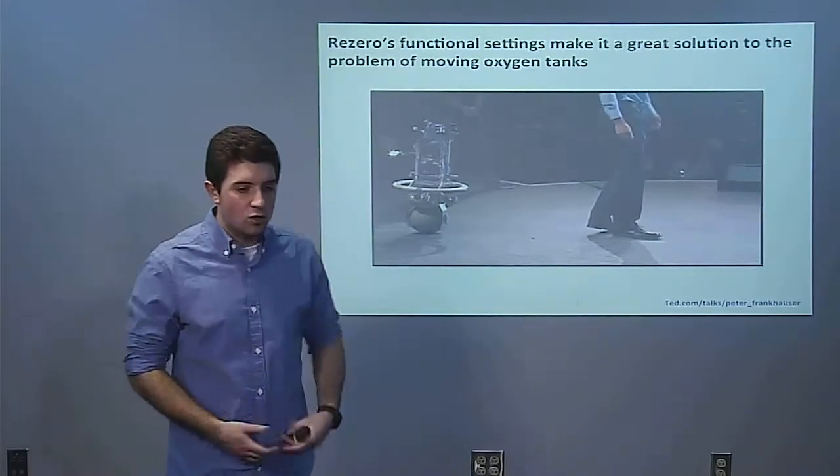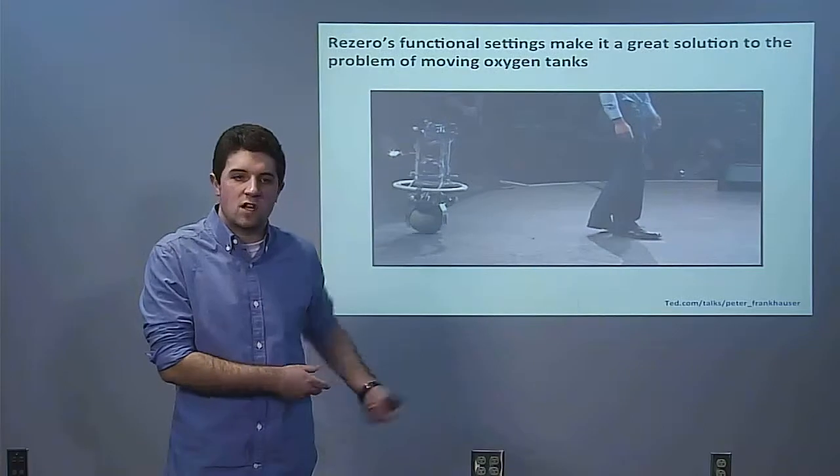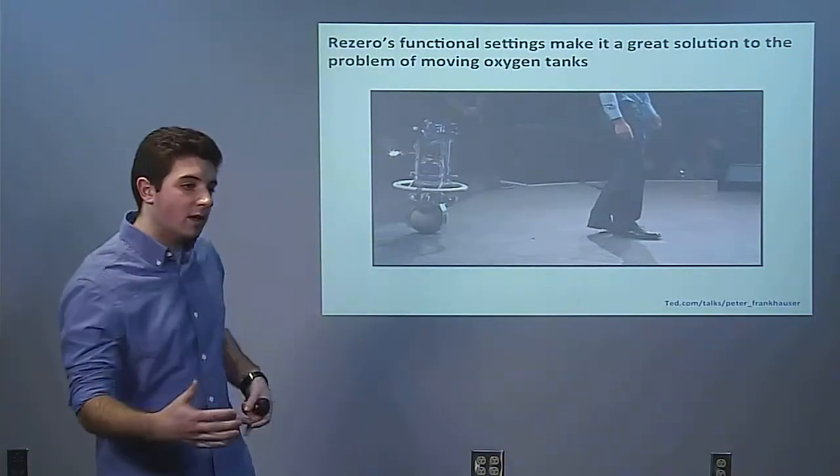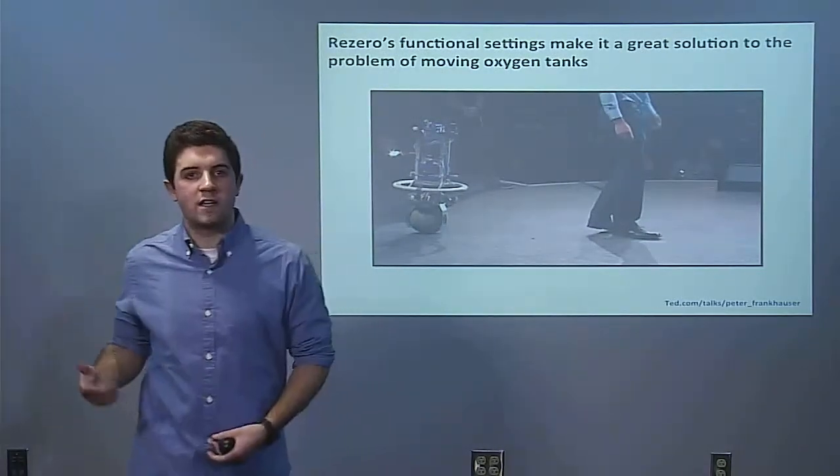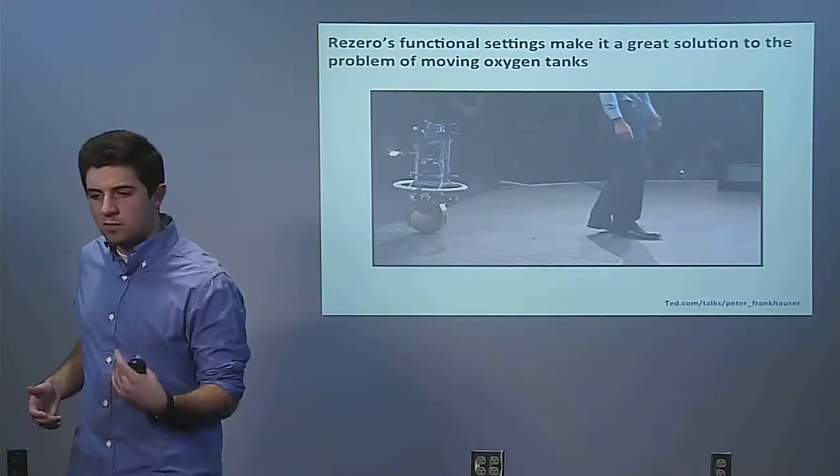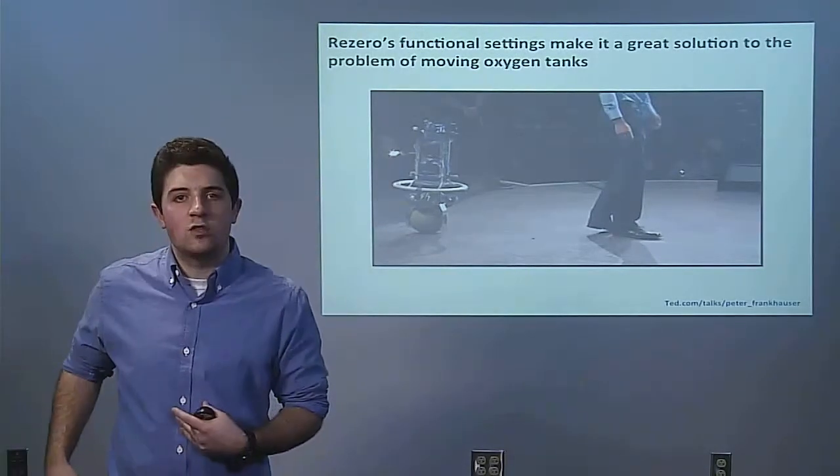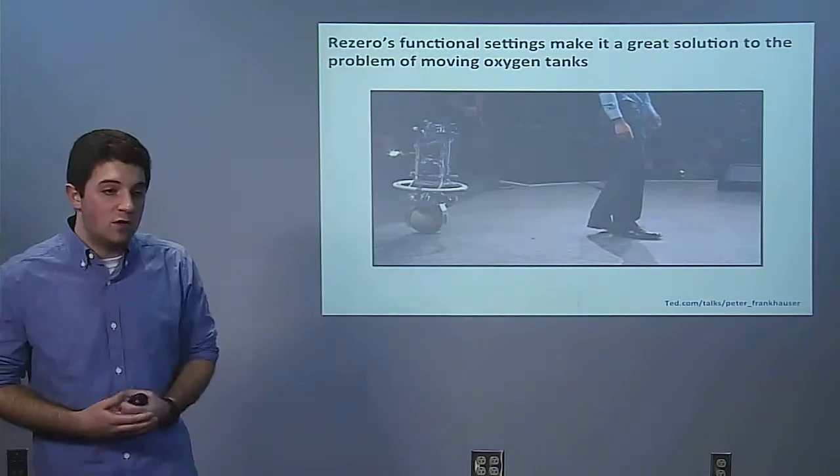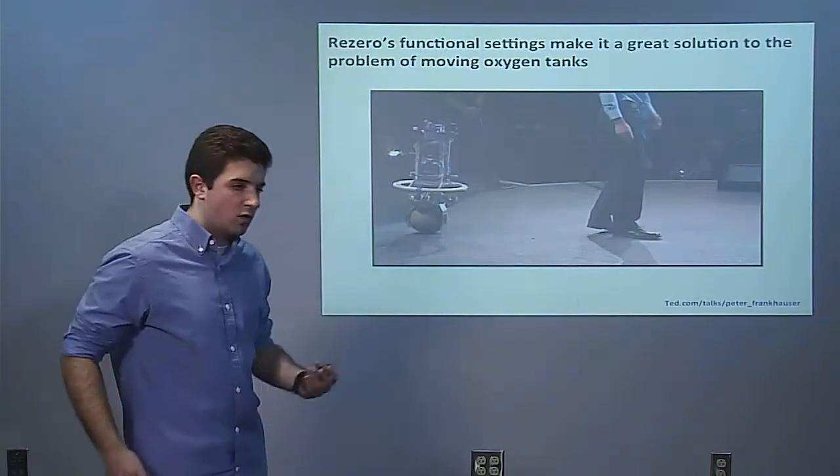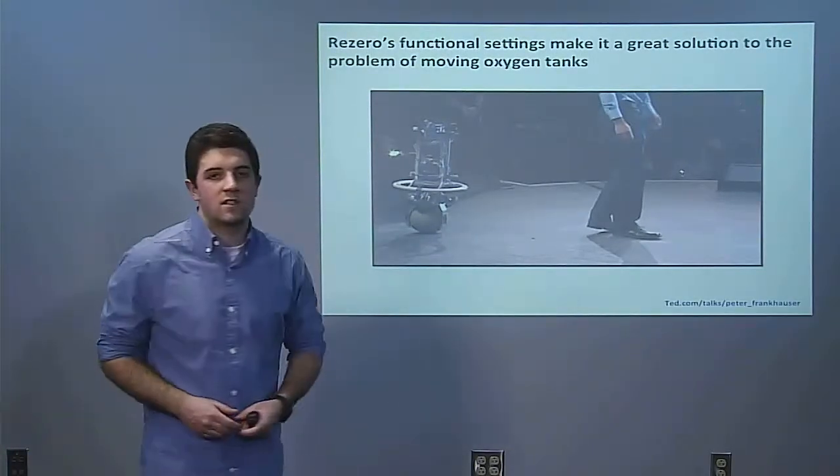Because if you're sitting, you can set it to maintain its position, and if it gets knocked, it will move a little bit and come back. Or if you're walking down a hallway, you can set it to the follow me mode, and it will follow you at a constant distance, not too close, not too far away. If you need to round a corner, you can have it orbit you and make that turn nice and smoothly.